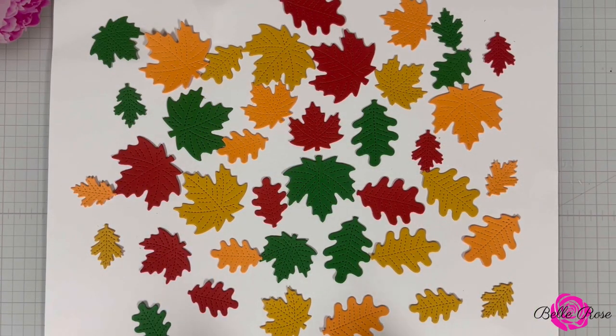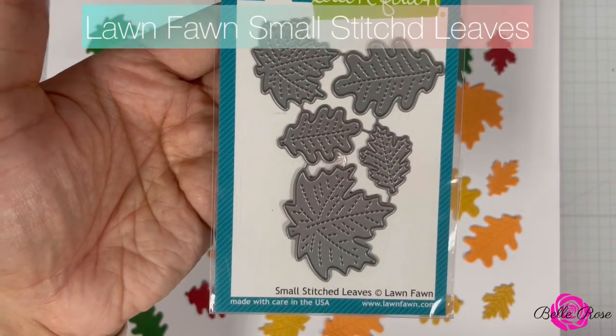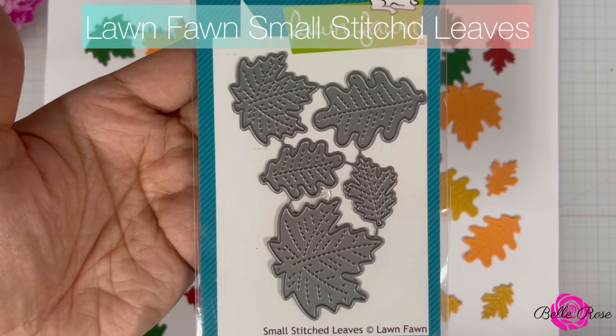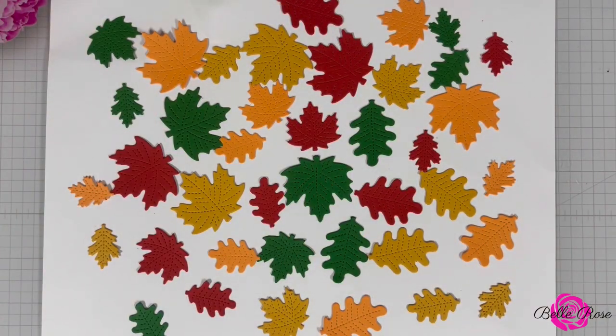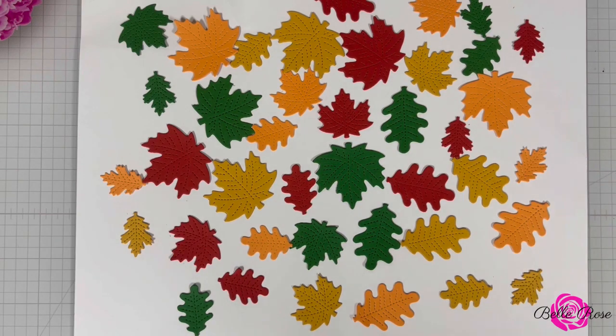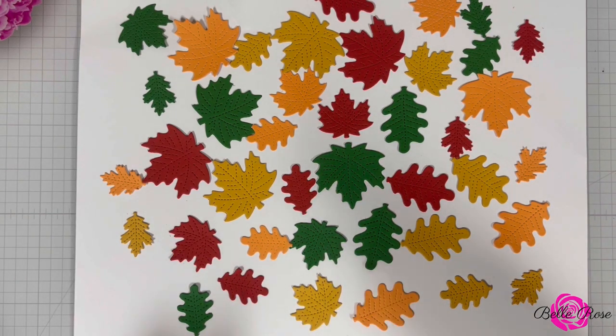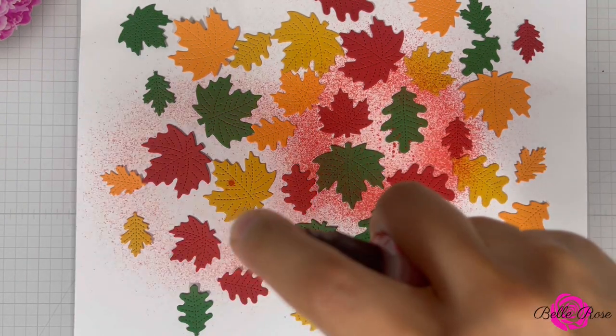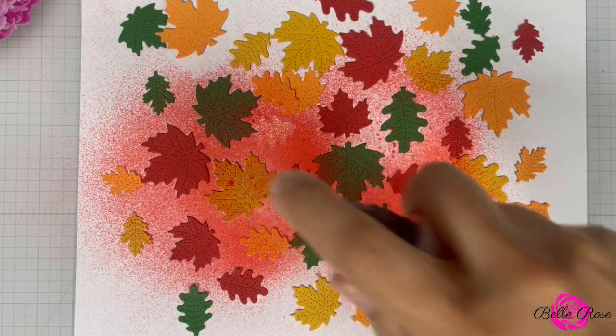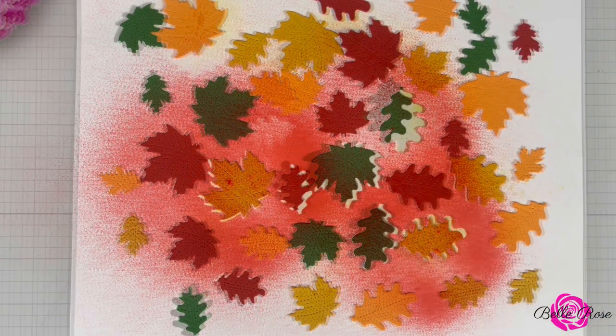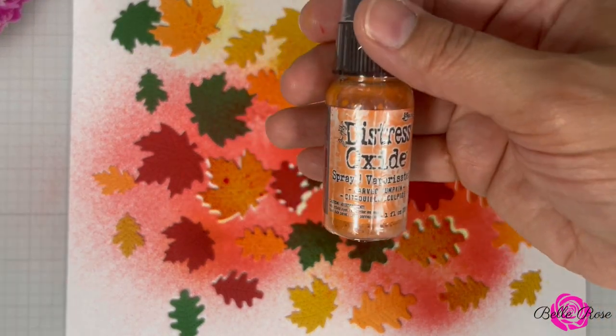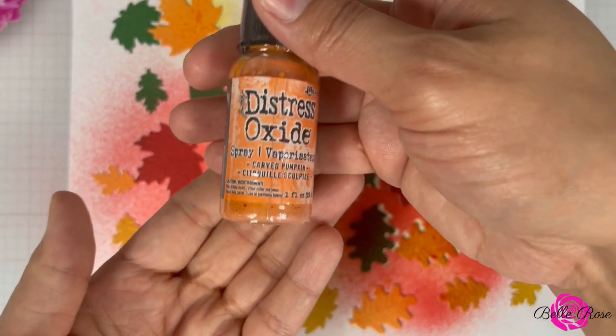To begin, I brought in Lawn Fawn's Small Stitched Leaves Die Set. Off camera, I used a variety of cardstock colors such as red, orange, yellows, and greens to die cut the leaves. You also have the option to die cut the leaves out of white cardstock and then spray stain them with your oxides. Or you can use any color medium that you prefer, whether it's Copic markers or any inks that you would like to add color to your leaves.